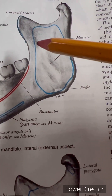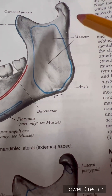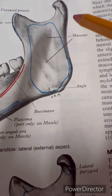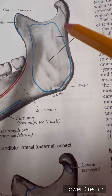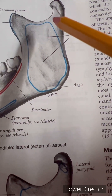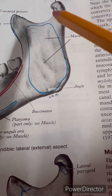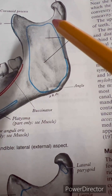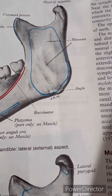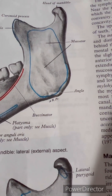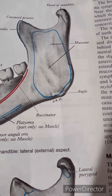Coming to the attachment of the neck of the condylar process: on the lateral aspect of the neck, the temporomandibular ligament is attached, which is covered by the parotid gland. Anteriorly on the neck, there is a pterygoid fovea which gives attachment to the lateral pterygoid muscle. The medial aspect of the neck is related to the auriculotemporal nerve above and the maxillary artery below.